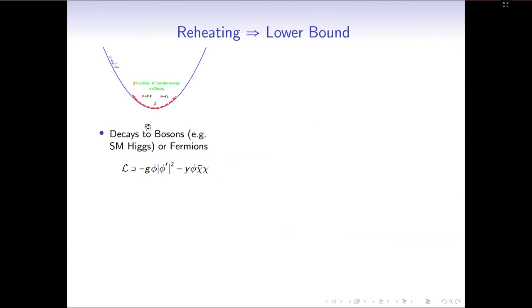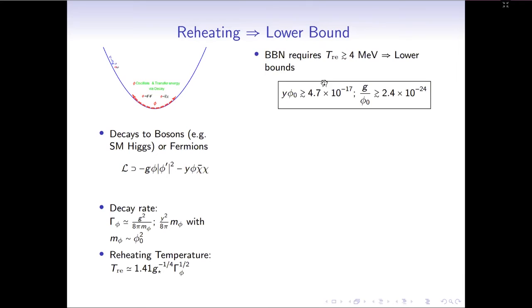In order to answer this question, I have to briefly discuss reheating. So reheating corresponds to a phase where inflaton oscillates around the potential minimum and transfers energy to some daughter particles. Here we consider the inflaton transfer to fermions or bosons with some tri-linear coupling. So once the decay channel is fixed, we can write down the decay rate, where M_phi is just the inflaton mass. Then we can estimate the reheating temperature. And by imposing the BBN constraint on the reheating temperature, we can get a lower bound for the coupling.